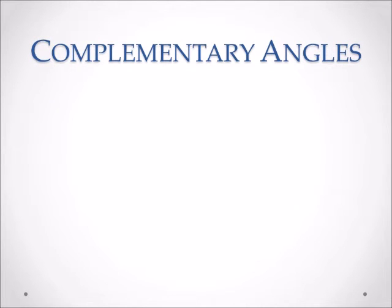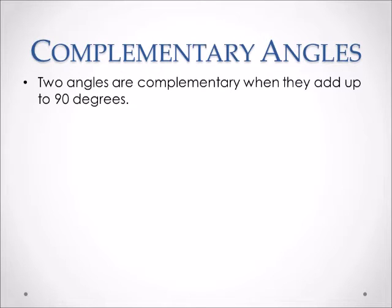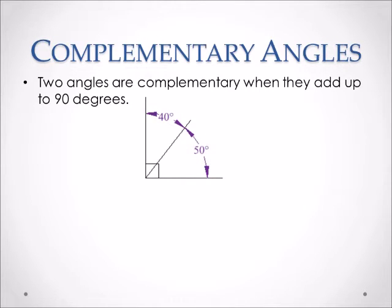Complementary angles are very different from 90 degree angles or right angles. Complementary angles are two angles that add up to 90 degrees. For example, here we have a 90 degree angle, but it is cut into two different angles — a 40 degree angle and a 50 degree angle. When you add 40 plus 50 together, that gives you 90. Therefore, 40 and 50 are both complementary angles.